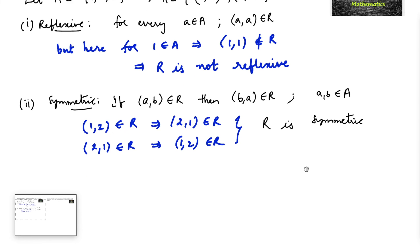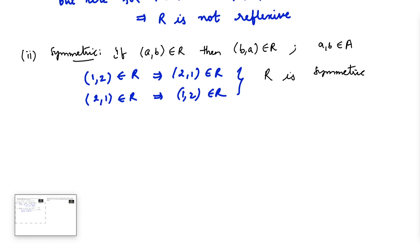Now let us check third, transitive. The condition for transitive is if (a,b) belongs to R and (b,c) belongs to R, then (a,c) must belong to R, for a, b, c belonging to the given set A.